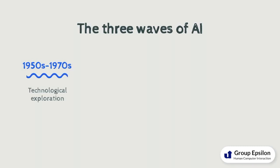AI has evolved in three waves. The first wave was from the 1950s to the 1970s and it focused on technological exploration. The second wave was from the 1980s to the 1990s and it focused on the enhancement of technology.